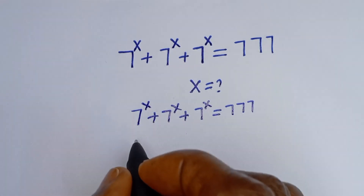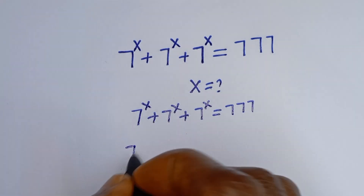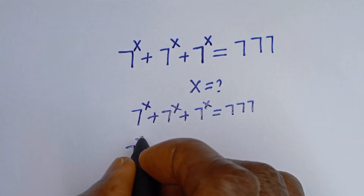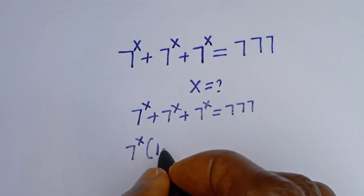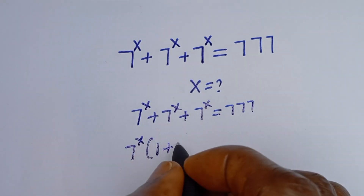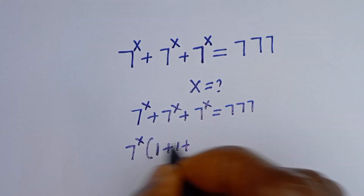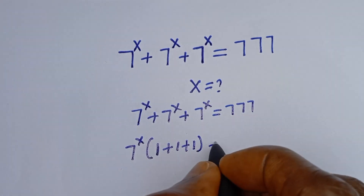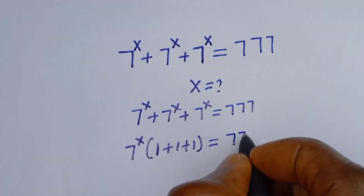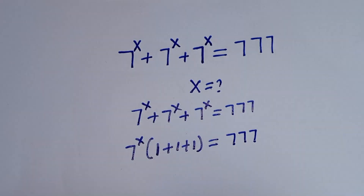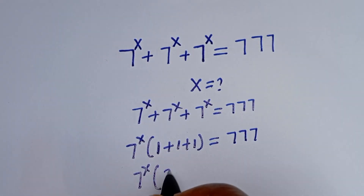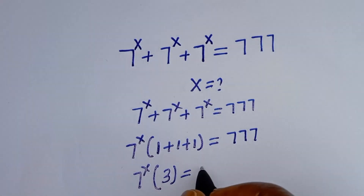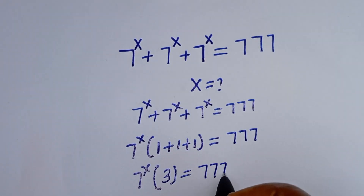Now 7 to the power of s is common — let's bring it out. 7 to the power of s, bracket: if you divide each term by 7^s, we have 1 plus 1 plus 1, which is 3, is equal to 777.